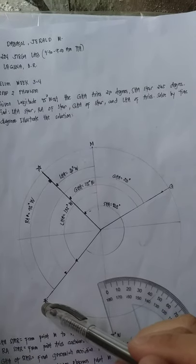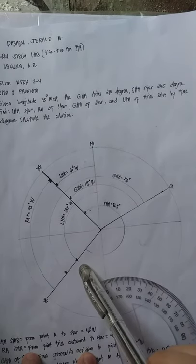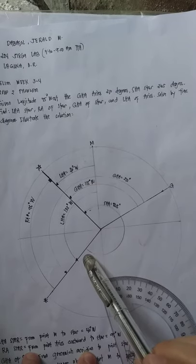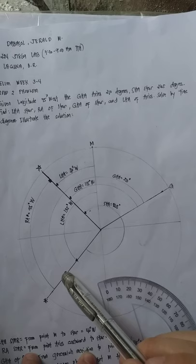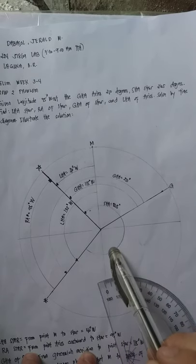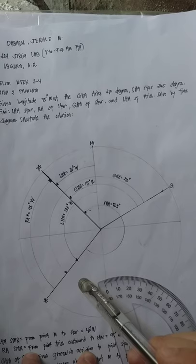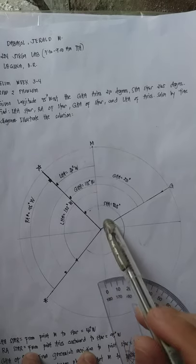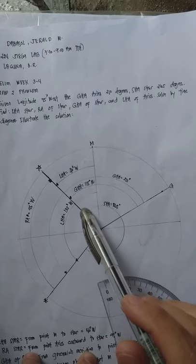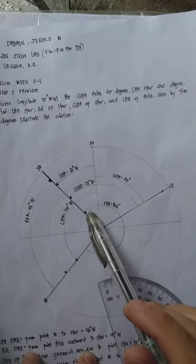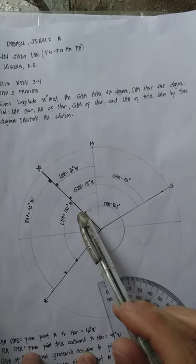The Sidereal Hour Angle of the star is 265°. Always remember that the starting point of the sidereal hour angle of any celestial body should start from the point of Aries. So from my point of Aries: 90° plus 90° equals 180°, plus 45° equals 225°, going in a westward or counterclockwise direction. I then add 40° more to get the complete 265°.